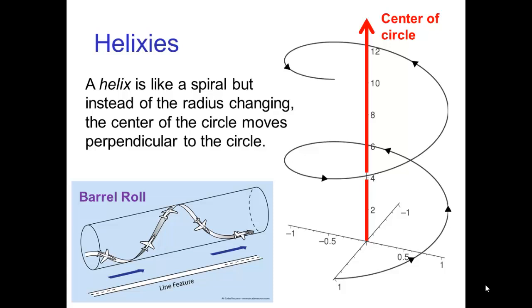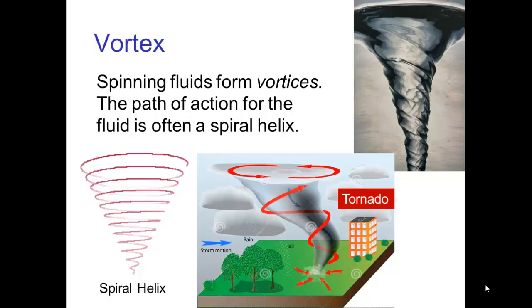An airplane doing a barrel roll is an example of a path of action that's a helix. Spinning fluids form vortices and the path of action for the moving fluid is often a spiral helix. Examples include water draining down a hole and air moving in a tornado.